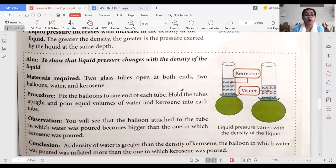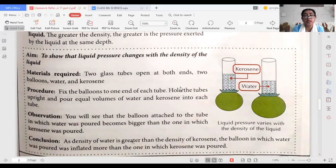We can take two glass tubes and then two balloons. In one we will take kerosene and in the second we will take water. We will fix the balloon to one end of each tube and hold the tubes upright and pour equal amounts of water and equal amount of kerosene into each tube.